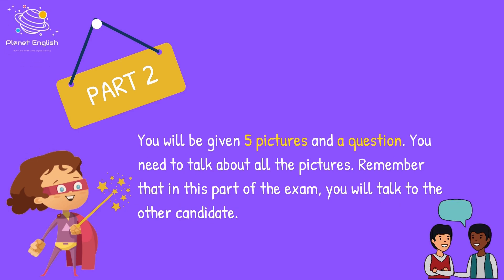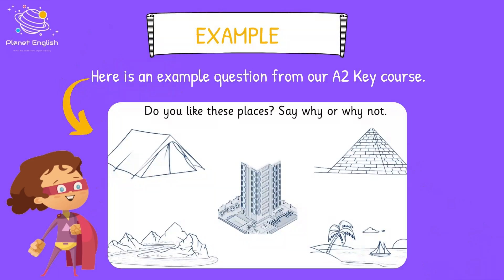You will be given five pictures and a question. You need to talk about all the pictures. Remember that in this part of the exam, you will talk to the other candidate. Here is an example question from our A2 Key course: Do you like these places? Say why or why not. There are five pictures — please try to talk about all of them and remember to give reasons for your answers.